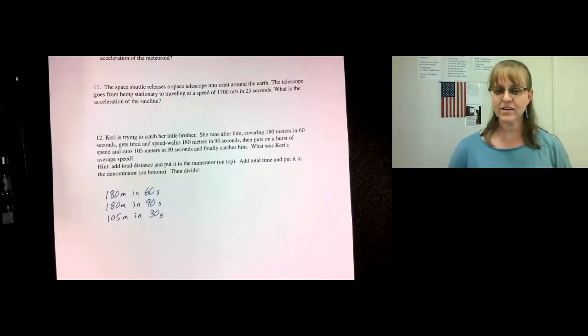In this last problem, Carrie is trying to catch her little brother. She runs after him, covering 180 meters in 60 seconds, gets tired and speed walks 180 meters in 90 seconds, then puts on a burst of speed and runs 105 meters in 30 seconds and finally catches him. What was Carrie's average speed?